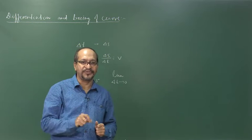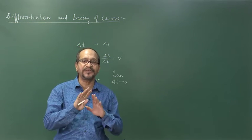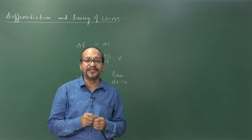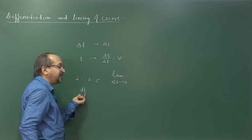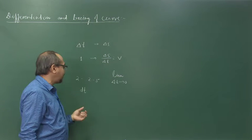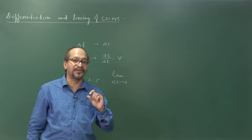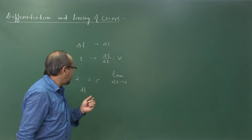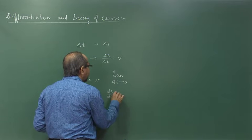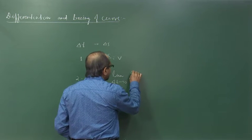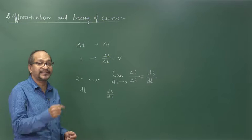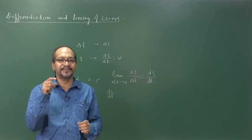As delta t approaches 0 — as close as possible to 0 but not equal to 0 — we call this infinitely small time interval dt. Delta t is a finite time interval, but dt is an infinitesimal time interval. The corresponding infinitesimal change in displacement is ds, and ds by dt — that is, limit delta t tends to 0 of delta s by delta t — gives you the velocity exactly at that instant of time.